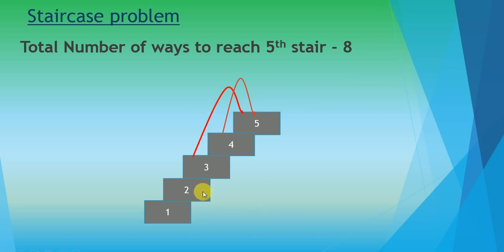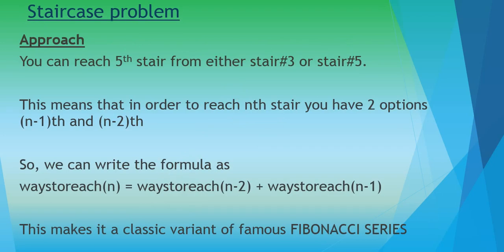You can't reach the fifth stair from stair number two because of the limitation — either one step at a time or two steps at a time. So the approach we are going to follow: you can reach the fifth stair from either stair number three or stair number four. Generalizing the problem, n is the stair we need to reach — five in our case. So you have two options: either the (n−1)th or the (n−2)th stair. In order to reach the nth stair, you can come from either the (n−1)th stair — stair four in our case — or the (n−2)th stair — stair three in our case.